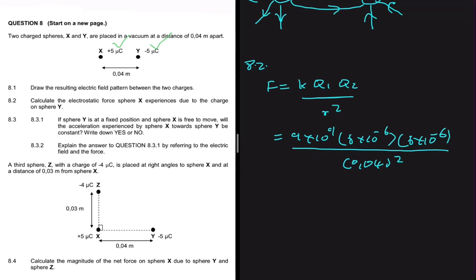In electrostatic force, the definition of Coulomb's law says that the electrostatic force is directly proportional to the product of the magnitude of the charges. So we're only interested in the magnitude. So now it's just a matter of plugging that into your calculator, and you shall get 140.63 newtons.